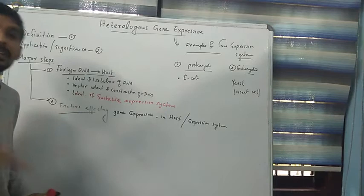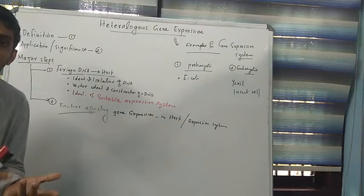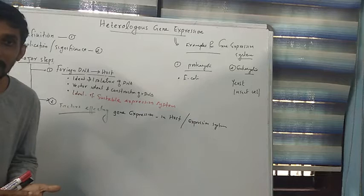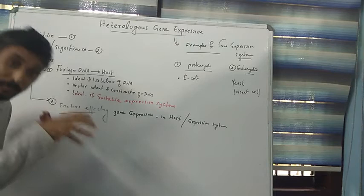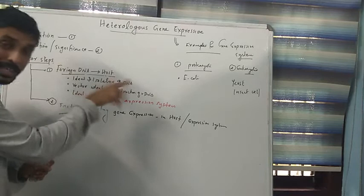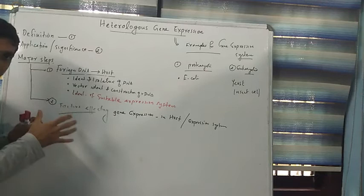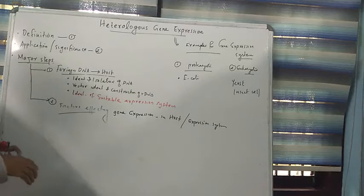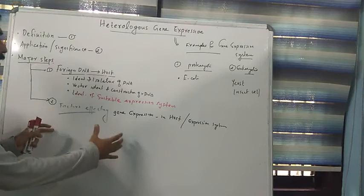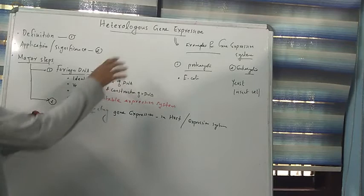All these factors affect the expression of the newly introduced foreign DNA inside the host cell. Before conducting the process, we must understand what are the initiation, elongation, and termination factors of transcription and translation which affect the expression of this inserted foreign DNA. These are the two major steps we follow while doing heterologous gene expression.